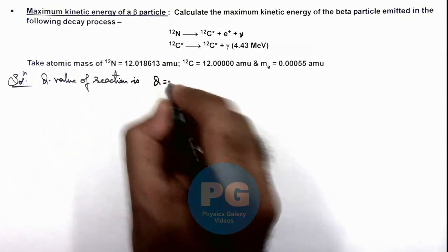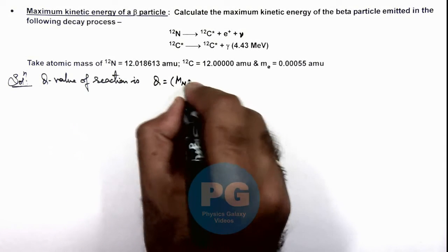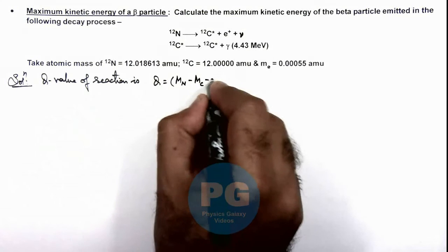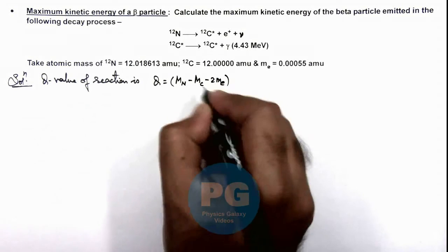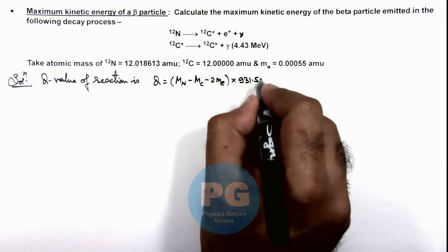The Q value we can write for beta plus decay should be mass of nitrogen minus mass of carbon minus twice the mass of electron, multiplied by 931.5 MeV.